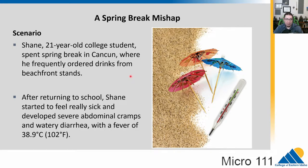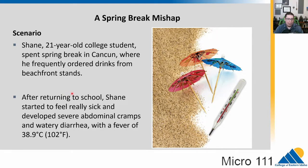Let's start with a case study. We have Shane, a 21-year-old college student on spring break in Cancun, getting lots of drinks from a stand on the beach. When he gets back to school, he starts feeling really sick — and this isn't just a hangover. He has severe abdominal cramps, watery diarrhea, and a fever of 102°F (38.9°C). So clearly something is wrong; it's probably an infection of some sort.